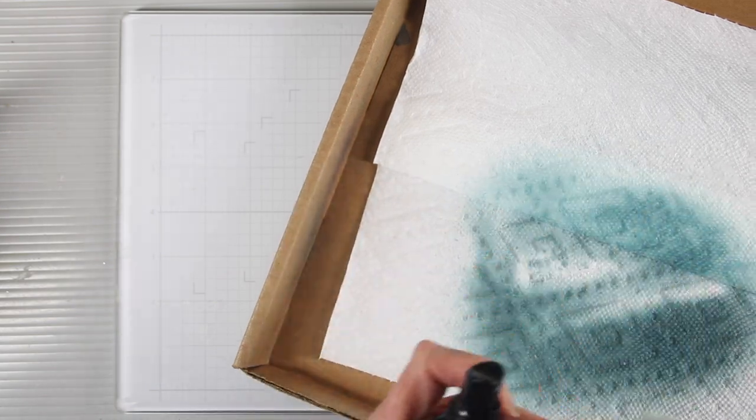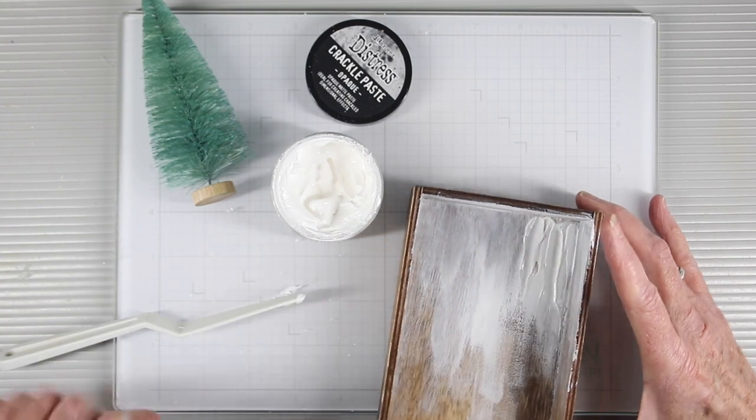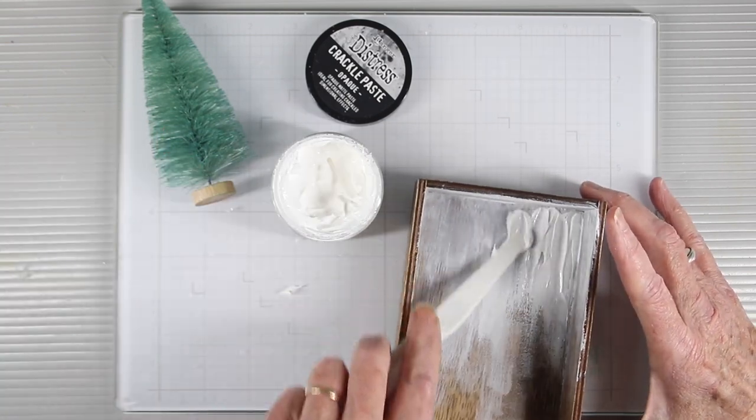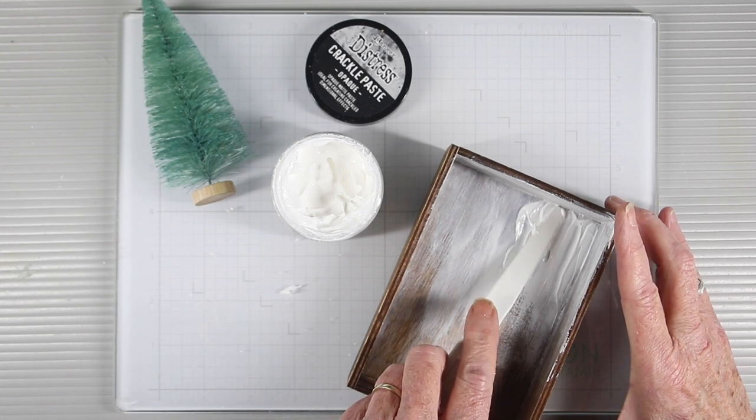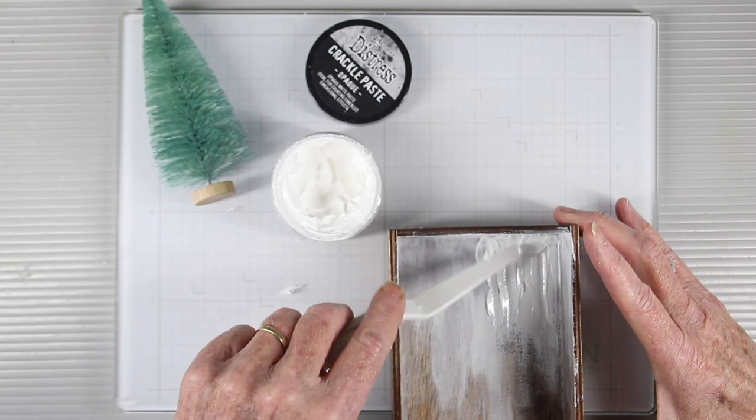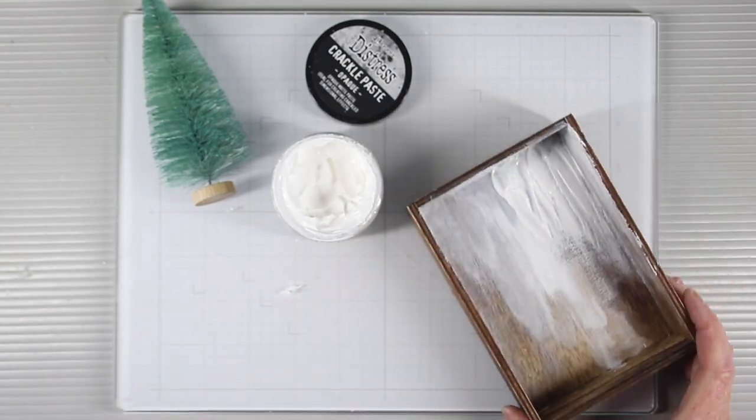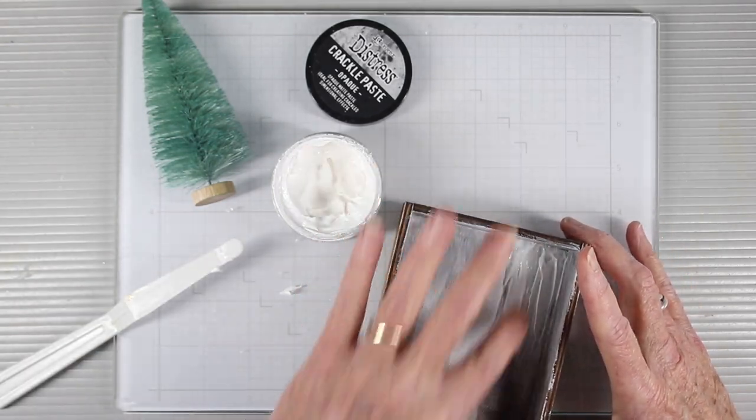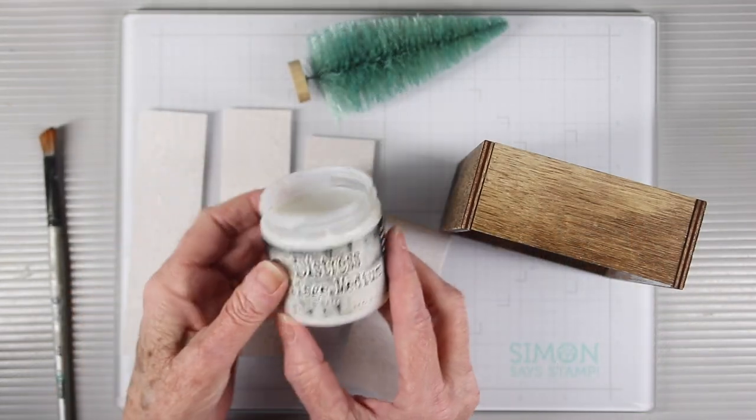Now I'm adding in some of the crackle paste and I'm putting it down with a palette knife and smoothing it out with my finger. I want to continue the randomness of those brush strokes that I had from the gesso and I'm also pushing it up into that crease using the palette knife. By smoothing with my finger it gives me a nice texture when it's done drying.